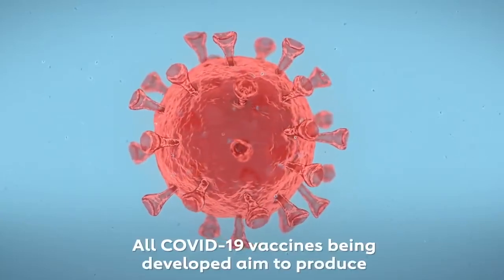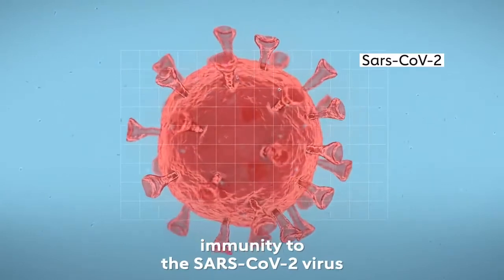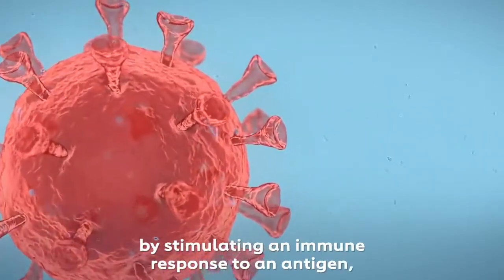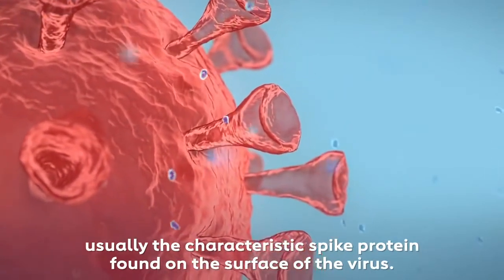All COVID-19 vaccines being developed aim to produce immunity to the SARS-CoV-2 virus by stimulating an immune response to an antigen, usually the characteristic spike protein found on the surface of the virus.